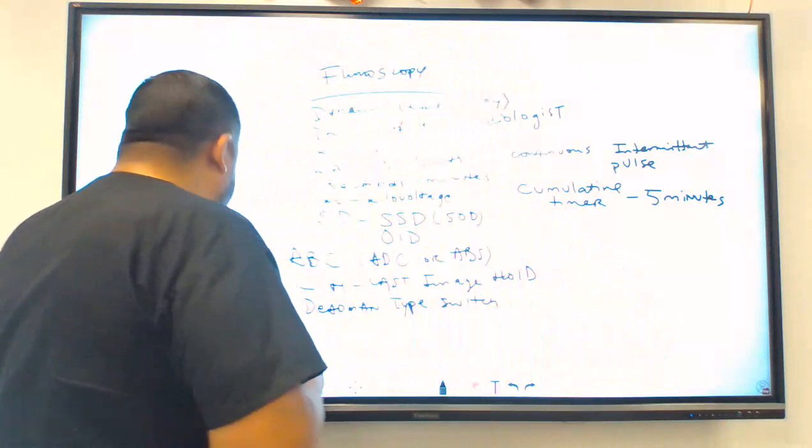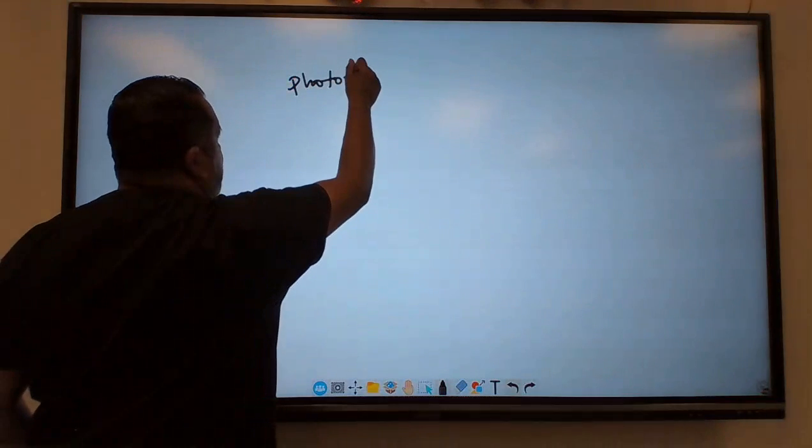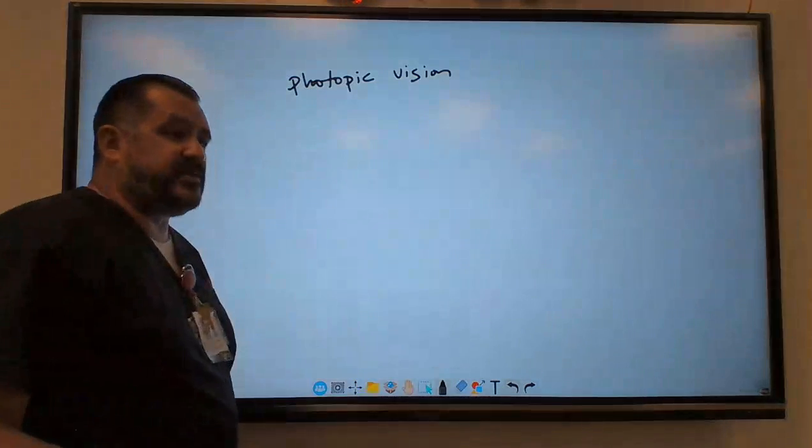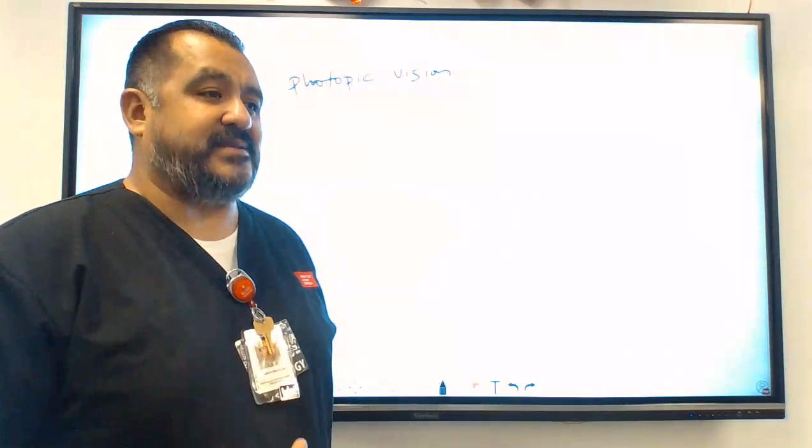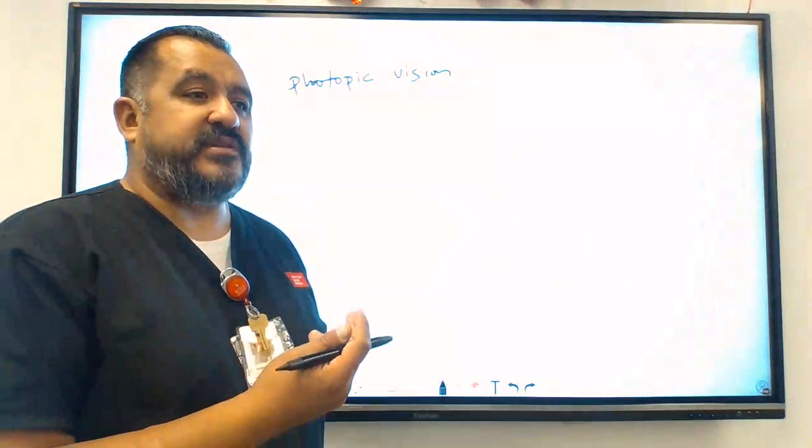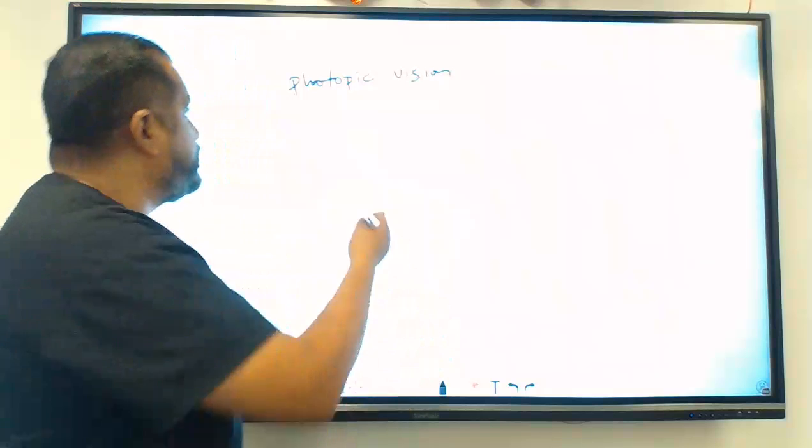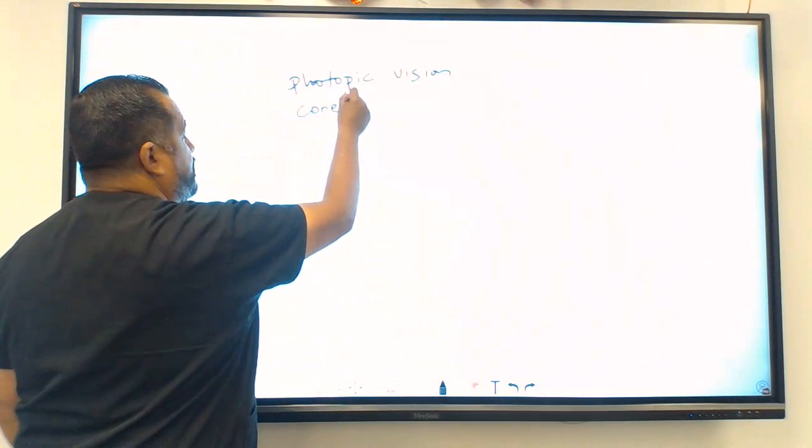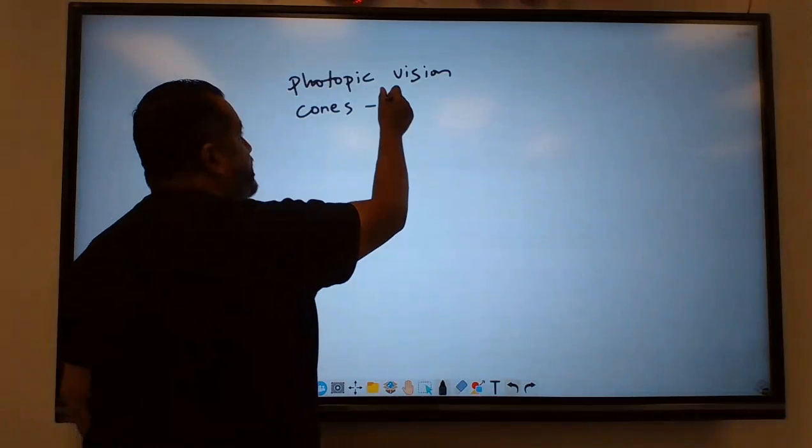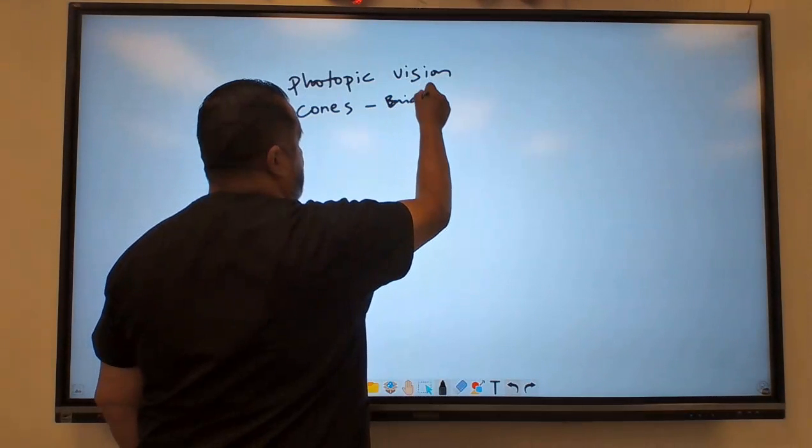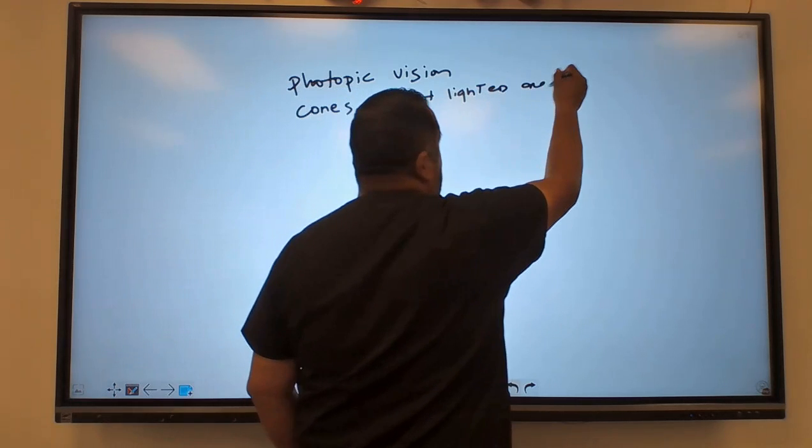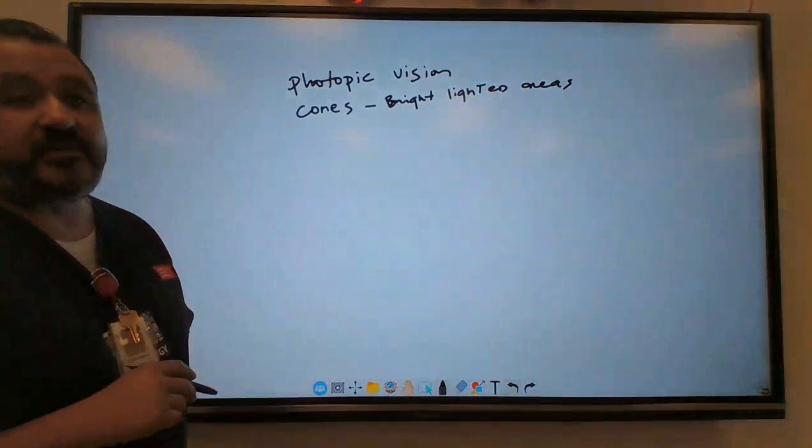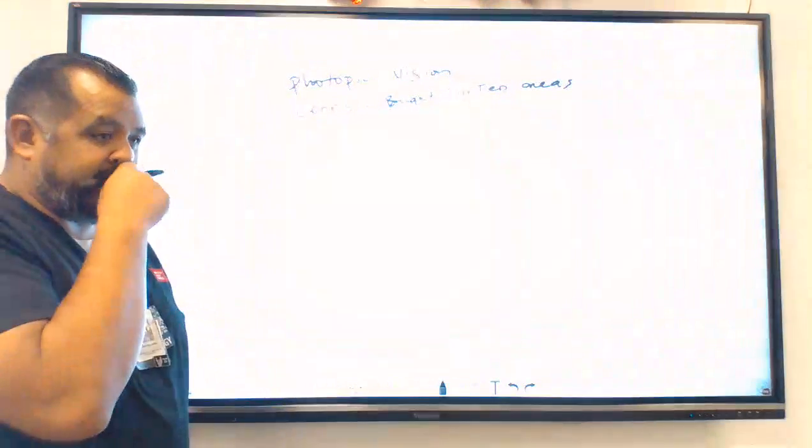So one of the terms that we have to understand is what's called scotopic and photopic vision. So photopic, what does photo mean? Photo means light, correct? So you have vision that uses what's called cones. So we have what's called cones and rods in our eyes. So cones are being used for photopic vision. And this is for bright lighted areas, so bright lights. This is daytime, bright lighted areas, daytime. So what we use is called the photopic vision. And photopic, we have cones.